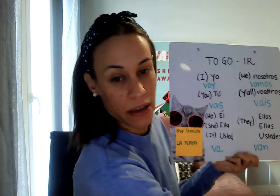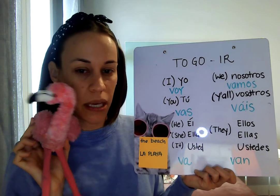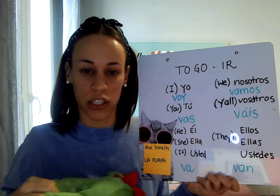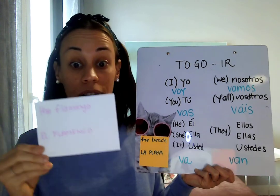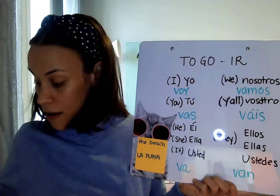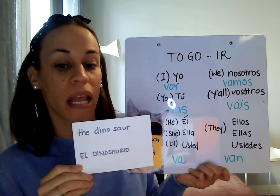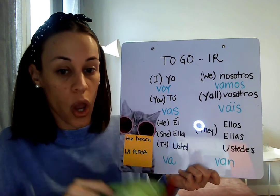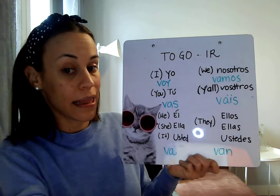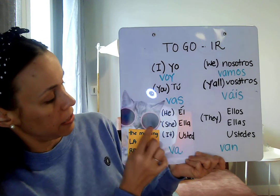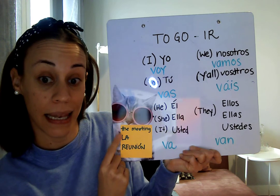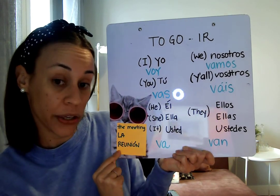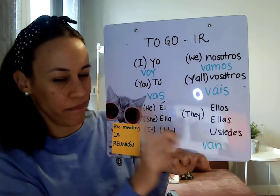Now we have two friends that will go together: this flamingo, who is a girl, and this dragon — maybe he's a dinosaur — who is a boy. That means it's a mixed group, so we will say ellos. We have el flamenco, the flamingo, and el dinosaurio. Since one is a girl and one is a boy, we say ellos. I think they are going to go to the meeting, la reunión. Ellos van a la reunión. Don't forget, it's van.